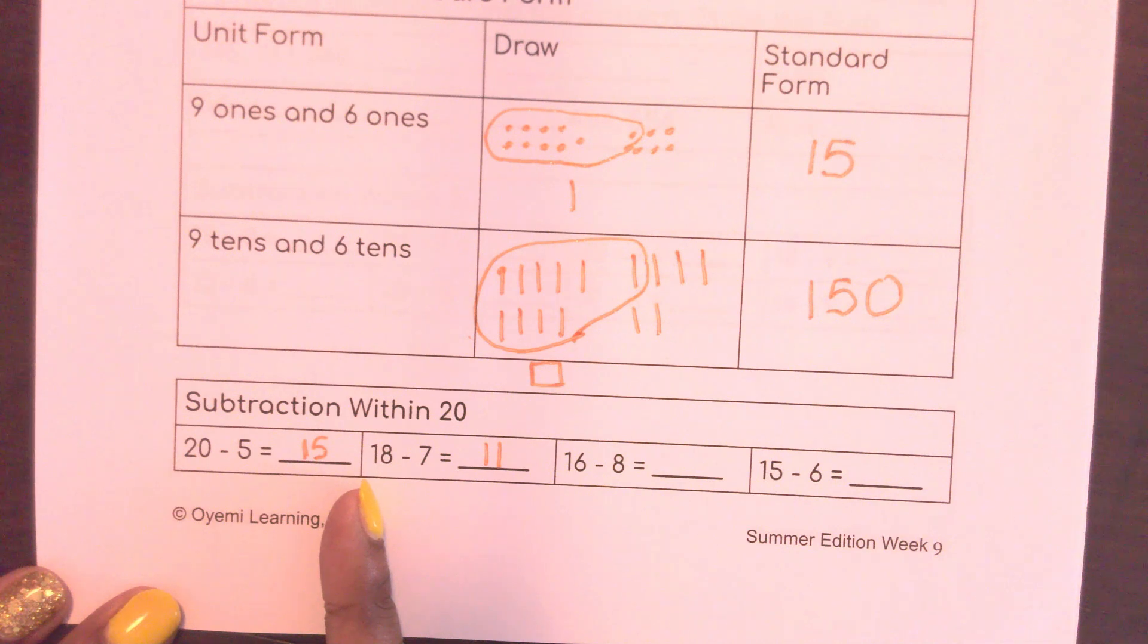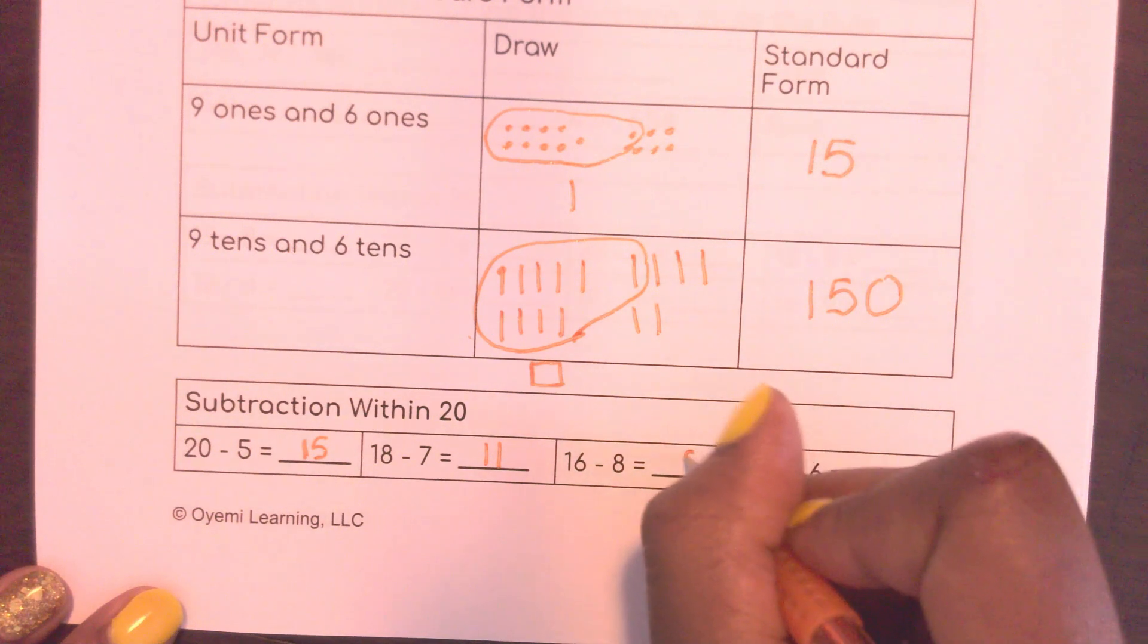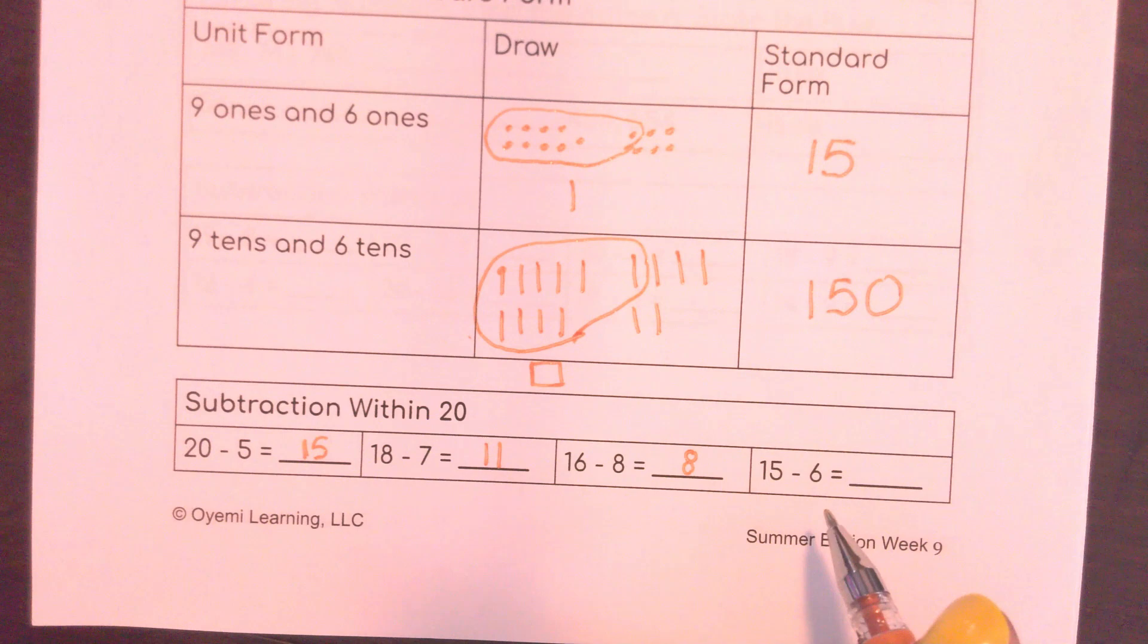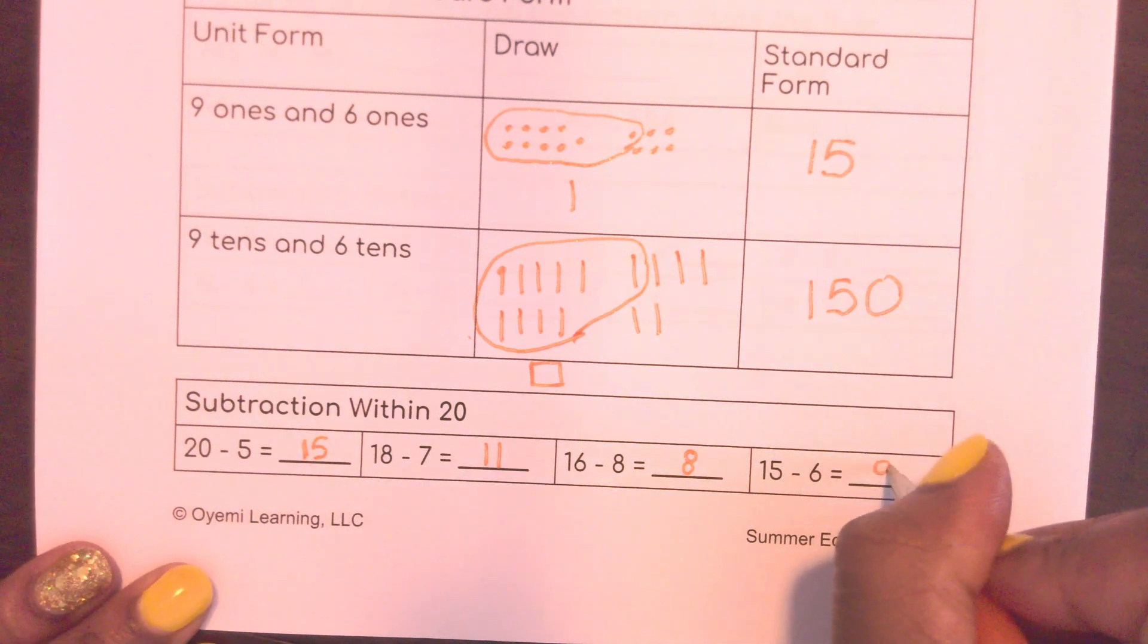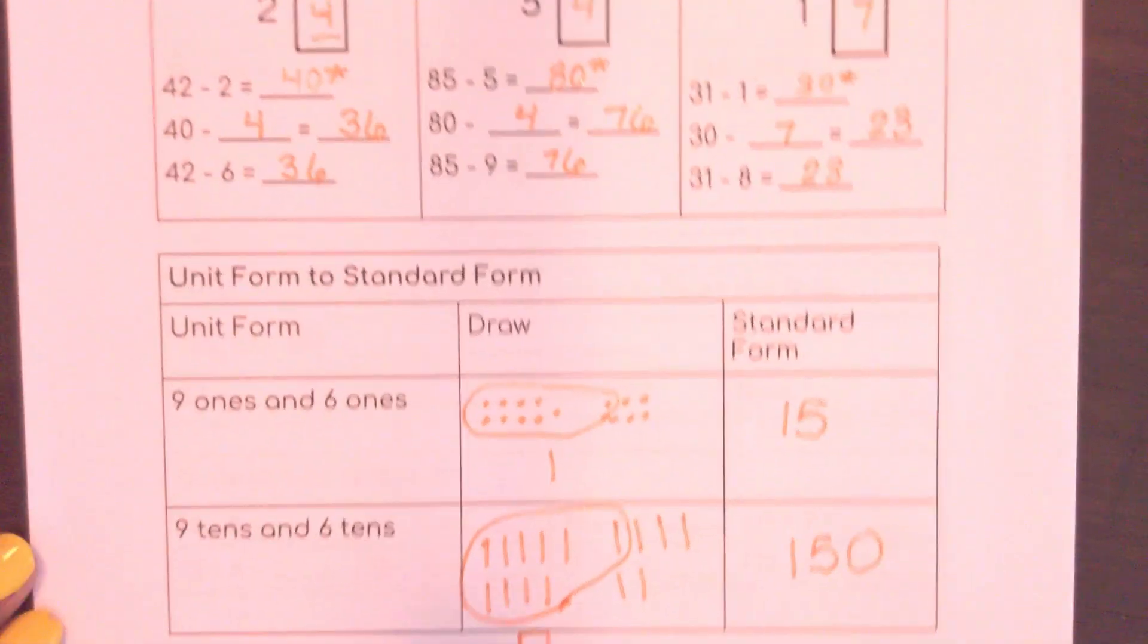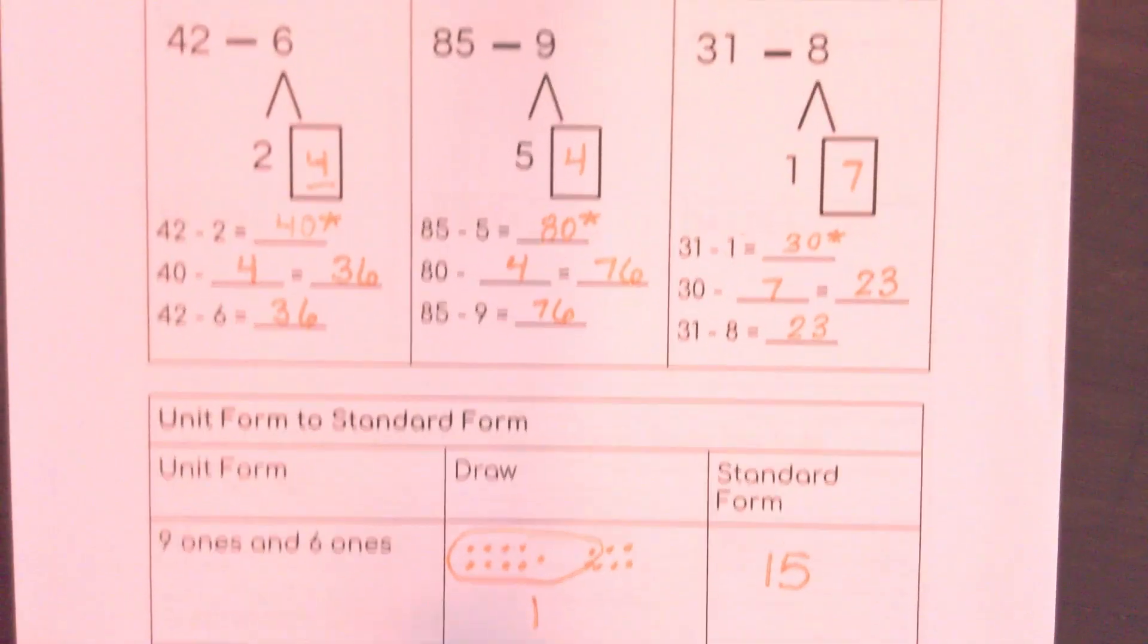It's like that fact family. Here I have 16 minus 8. If you know your doubles then you know 8 plus 8 would give you 16. And here I have 15 minus 6. Mentally I can make a 10. Remember we were doing that up at the top. So 15 minus 5 would give me 10, and if I subtract one more I would end up with 9. Excellent work today. We are going to get deeper and deeper into subtraction this week. See you tomorrow.